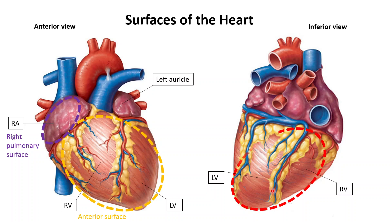The first surface we're going to talk about is the inferior surface. The inferior surface is mostly made out of the left ventricle and partly made out of the right ventricle. This surface is also called the diaphragmatic surface because it rests on the diaphragm.